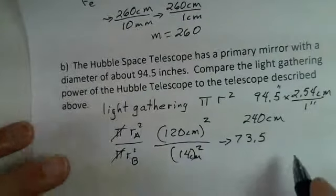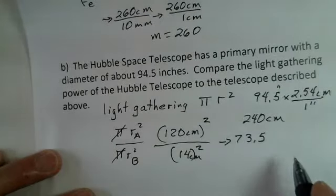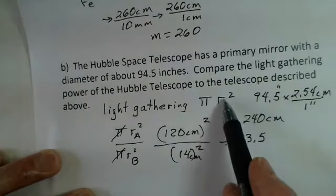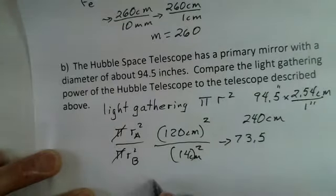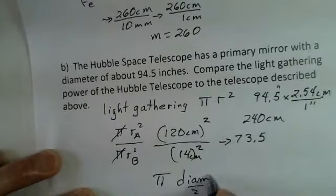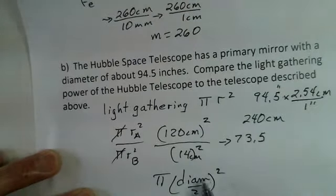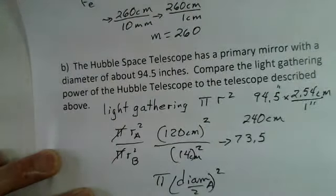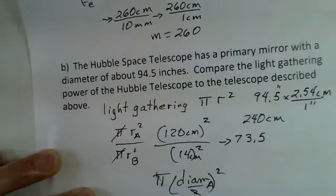We could also calculate πr² using diameter. Since diameter equals 2 times radius, we can substitute diameter over 2 for r and square it. This applies to both telescopes: π(diameter_A/2)² divided by π(diameter_B/2)². The factors of 2 cancel, so we can use diameter² of A divided by diameter² of B.